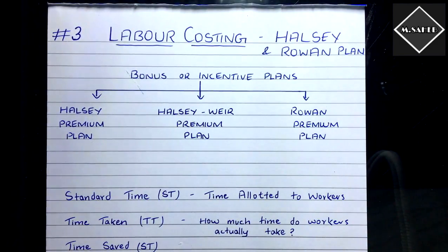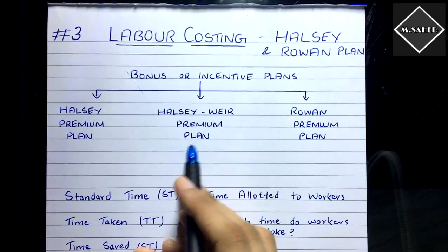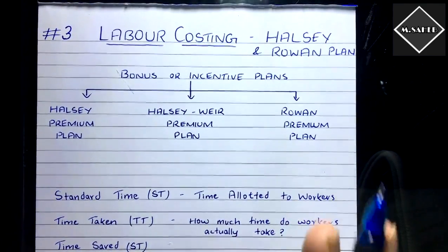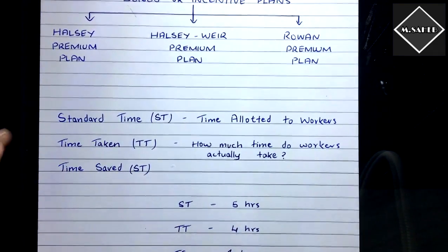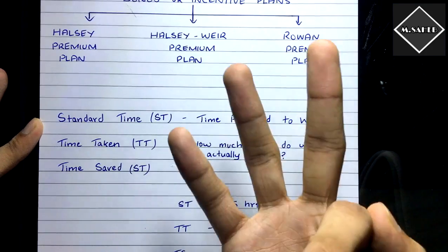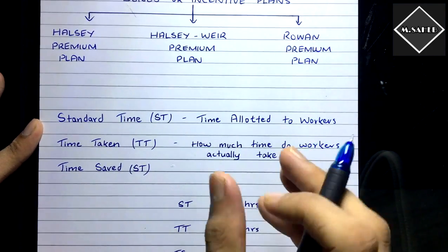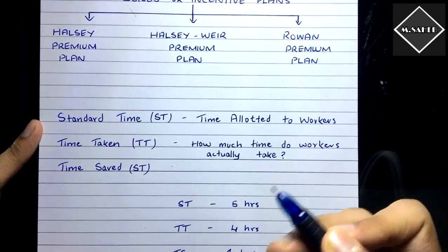In this third video we start with the bonus plans: Halsey Premium Plan, Halsey Via Premium Plan, and Rowan Premium Plan. Before going to the formulas, you need to understand three key terms. Standard time is the time allotted to workers to complete the production of one unit — just like you are allotted three hours to complete an exam.